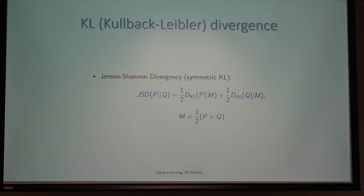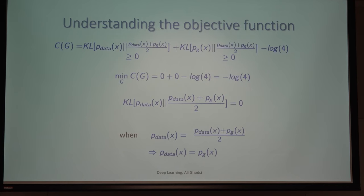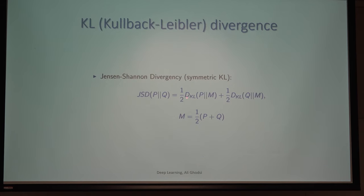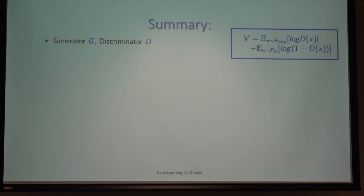Note that KL(p, q) ≠ KL(q, p) in general. What we have here is KL(p_data || m) + KL(p_G || m), where m = (p_data + p_G)/2. This combination is called the Jensen-Shannon divergence — a symmetric version of KL divergence. Any questions so far?